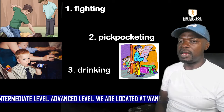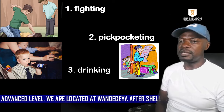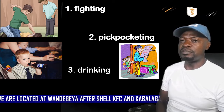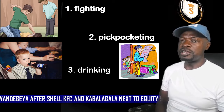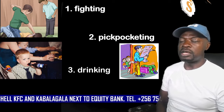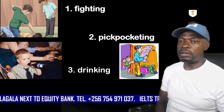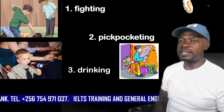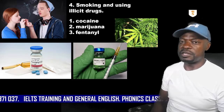Fighting is number one. Pickpocketing — stealing money and things from people around you — is another example. Drinking beer, drinking alcohol, drinking wine: it is illegal, it is bad behaviour by juveniles. These are examples of juvenile delinquency.